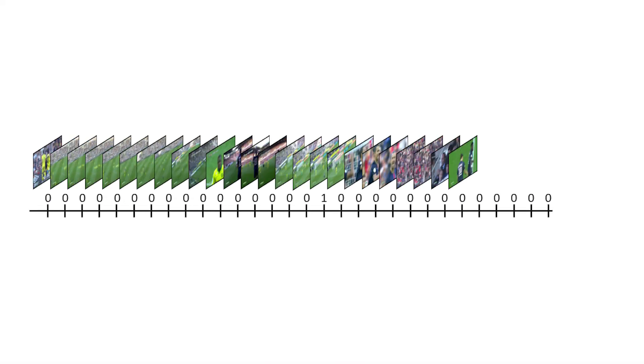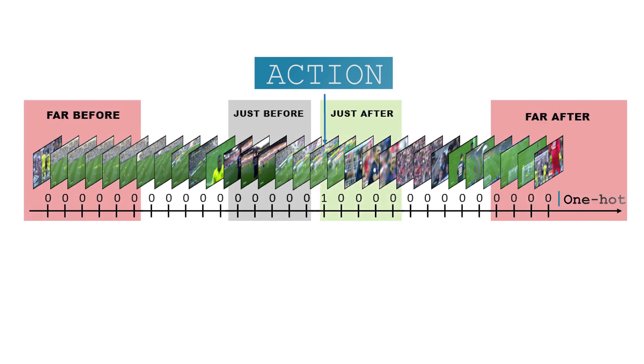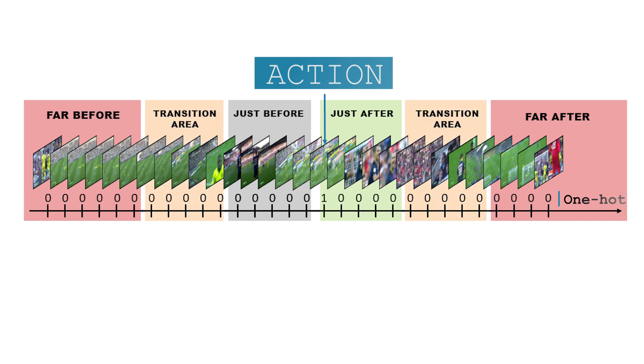Let's start with the basics of this paper: the temporal context. To leverage the natural context surrounding the actions, we start by defining six temporal segments around each ground truth action spot: far before, just before, just after, far after, and some transition areas. These constitute our action context slicing, and they will be used later on to induce specific behaviors in our loss.